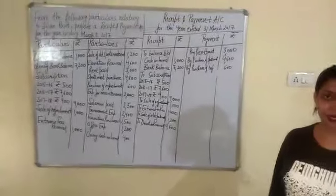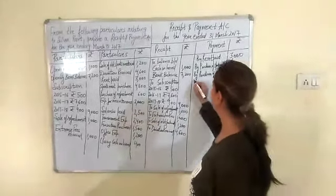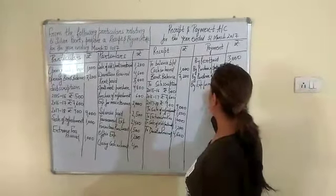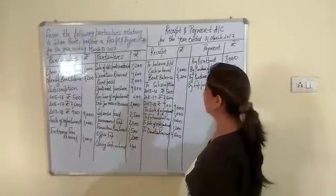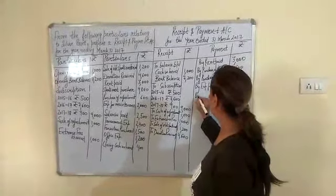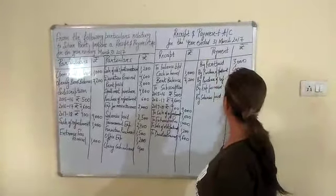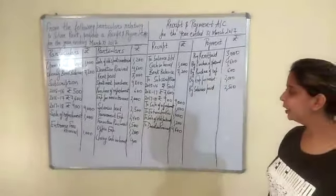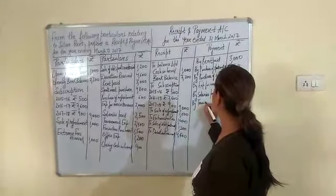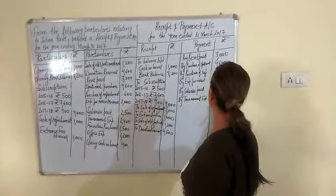We pay expenses for maintenance — that is our expenditure, and expenditures are written on the payment side. We write 'By Expenses for Maintenance', which is rupees 2,000. In the question we are also given salaries paid, which are also a payment: 'By Salaries Paid', rupees 25,000. After that, tournament expenses are also on the payment side because these are our expenditures: 'By Tournament Expenses', rupees 2,400.